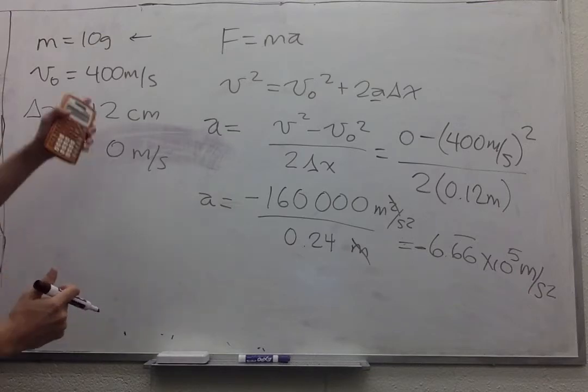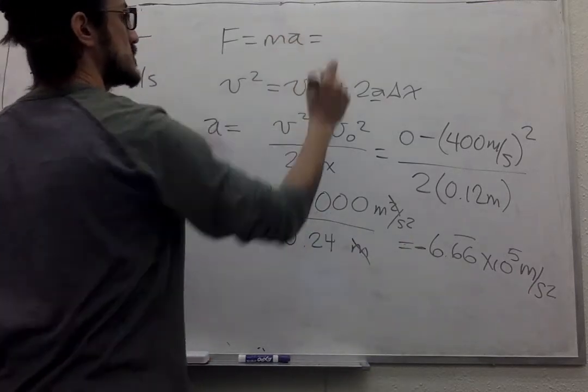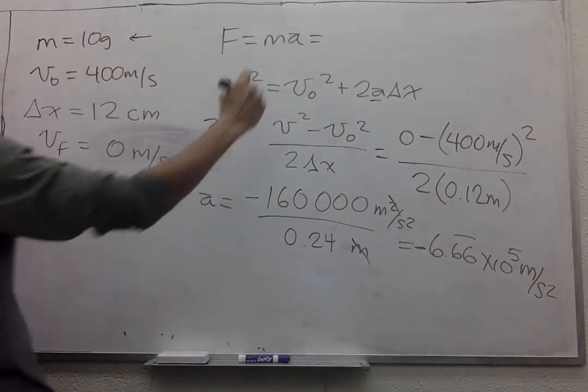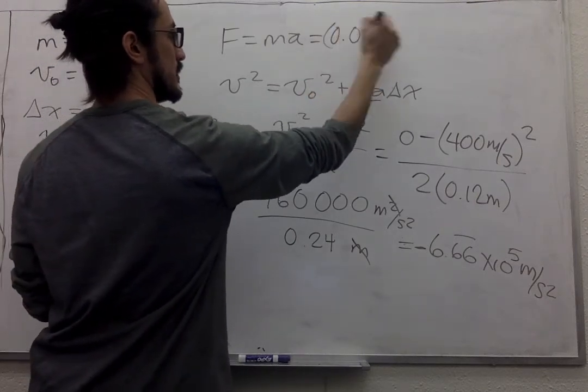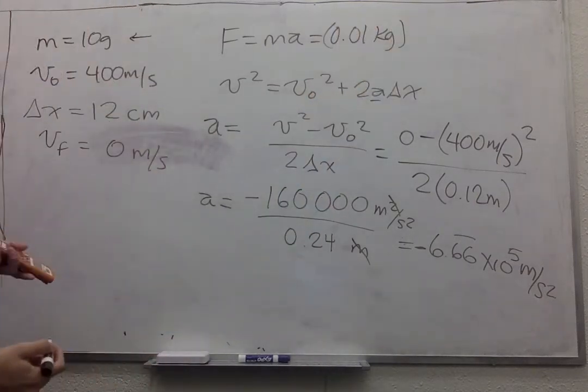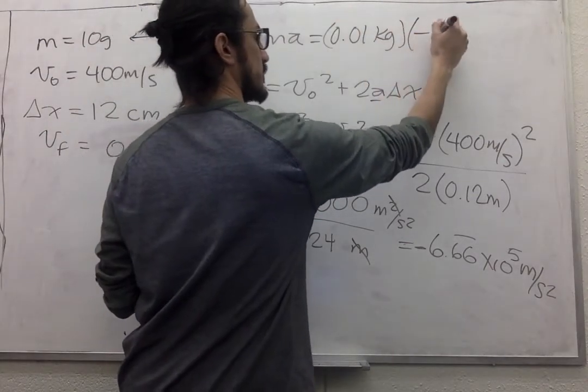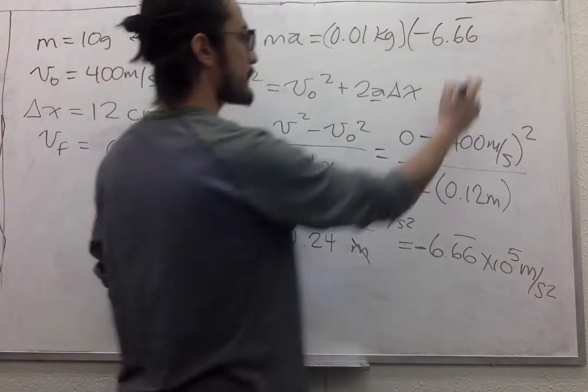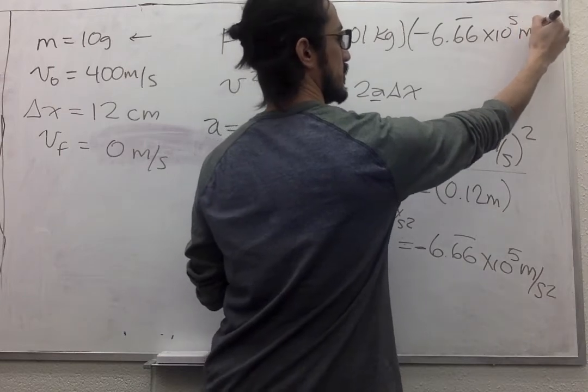So we have the mass over here, we have the acceleration. So the force is going to be 0.01 kilograms if we want our answer to be in newtons. And this will be negative 6.66 times 10 to the 5 meters per second squared.